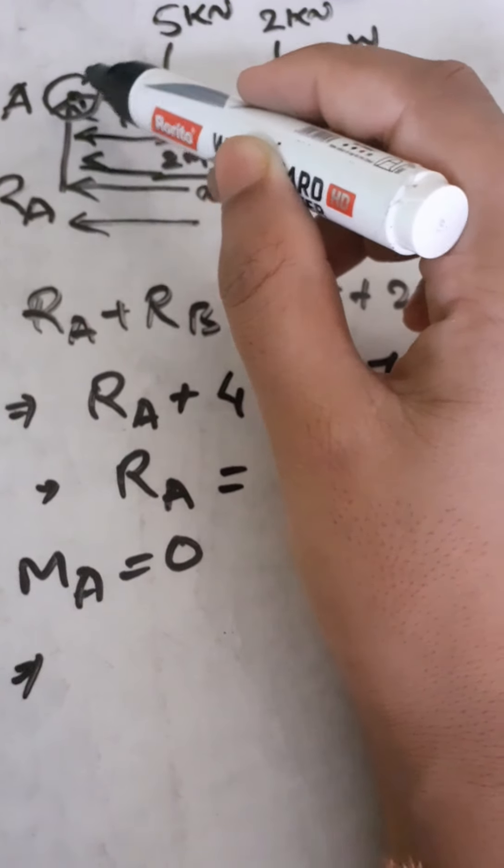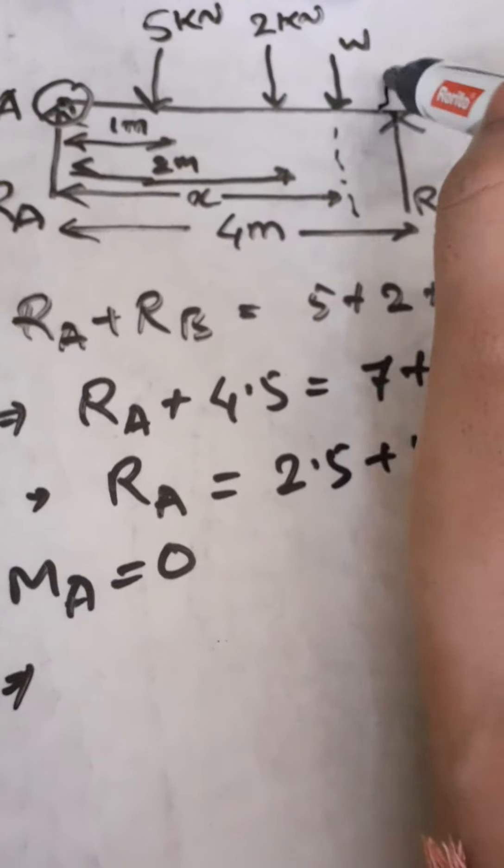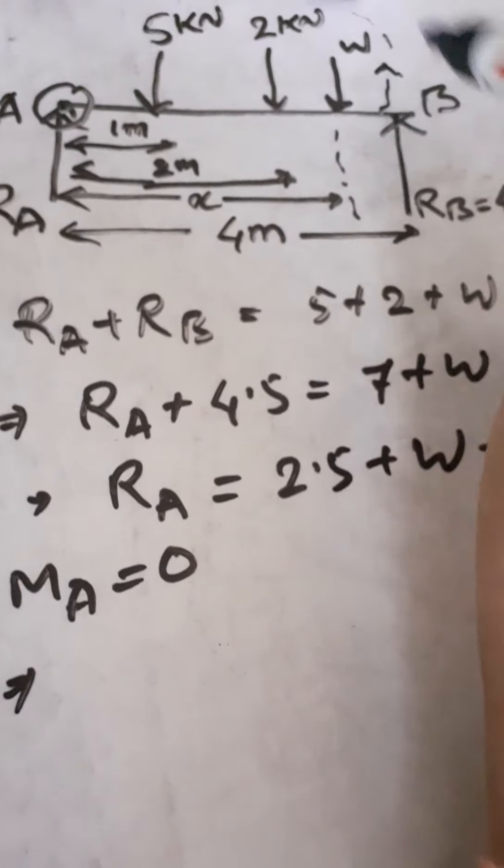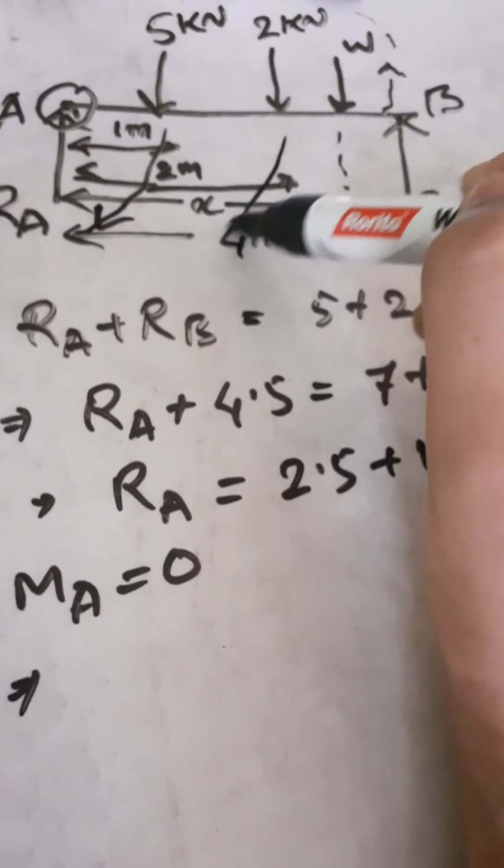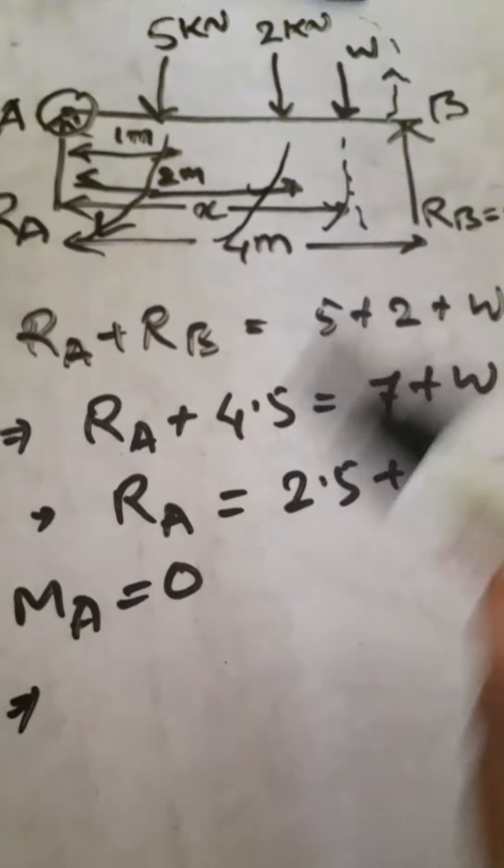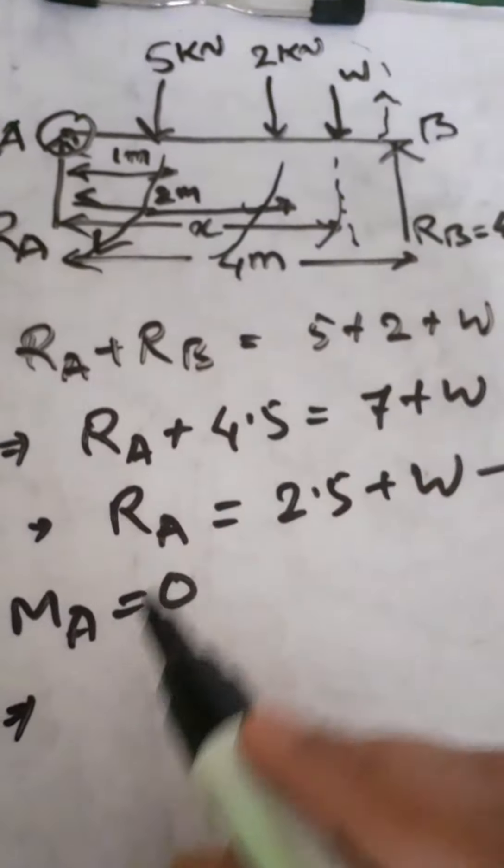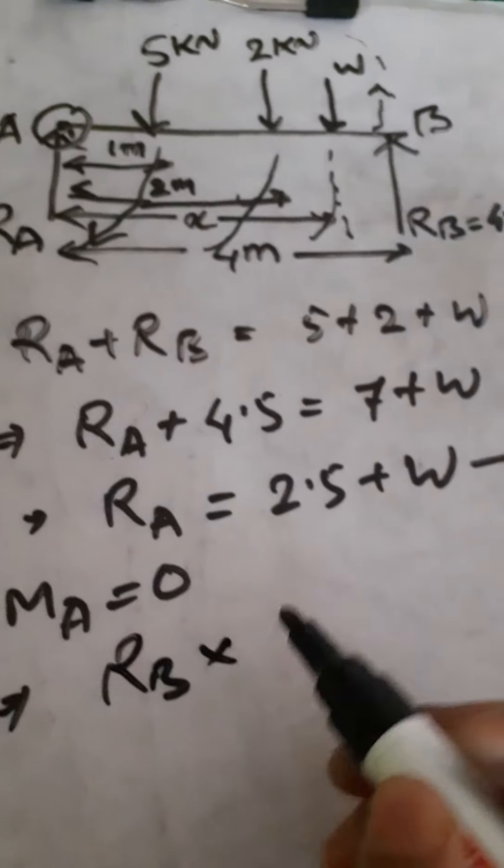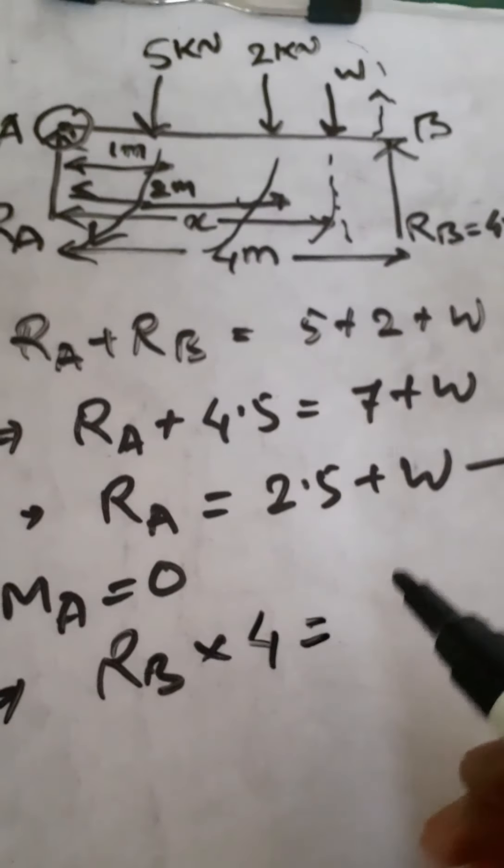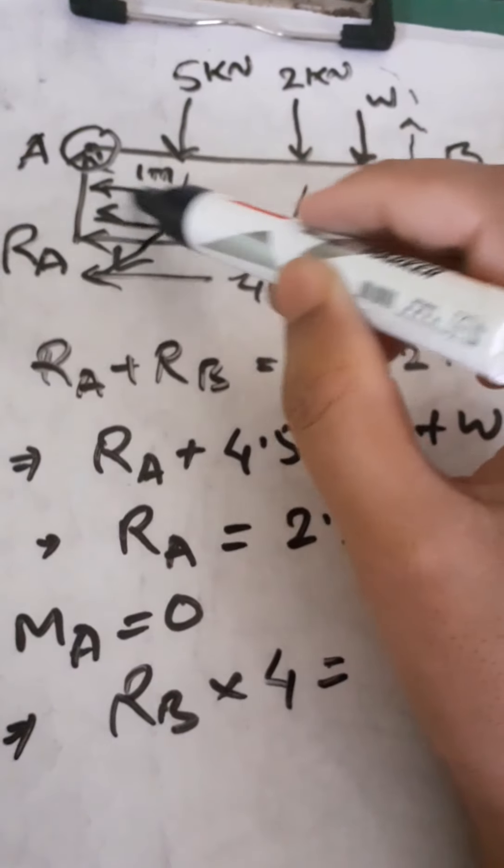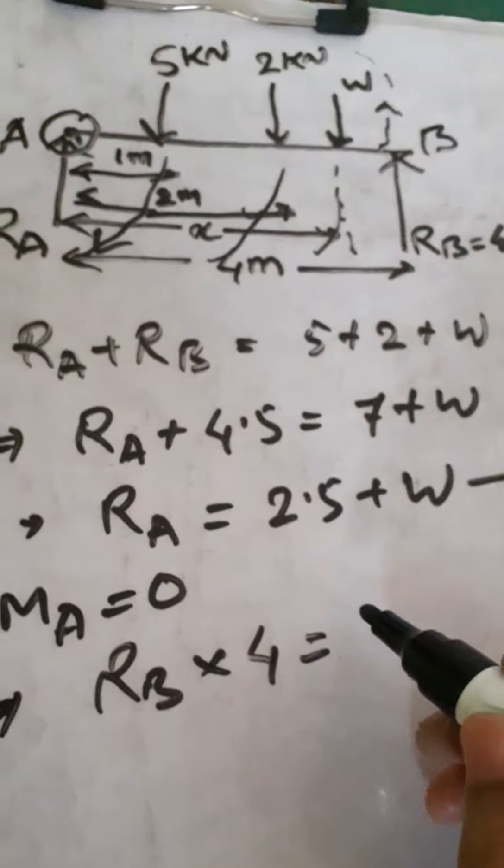All the forces creating clockwise moments about A are balanced by anticlockwise moments. So RB into the total distance of 4 equals 5 into 1.